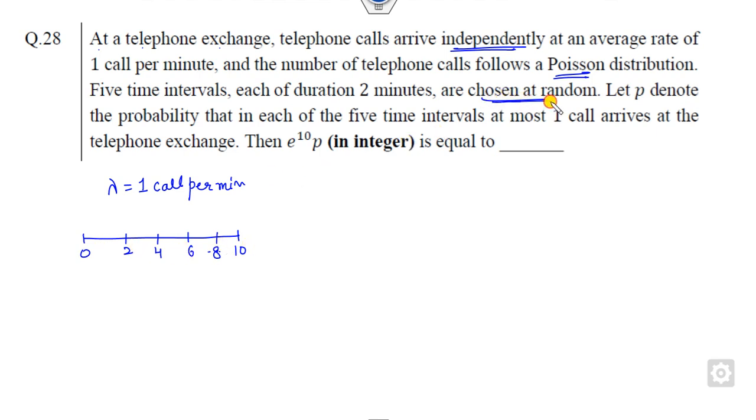Chosen at random, let p denote the probability, let small p denote the probability, the time five intervals is at most one. That's the meaning of this, that's the meaning of simple task order.